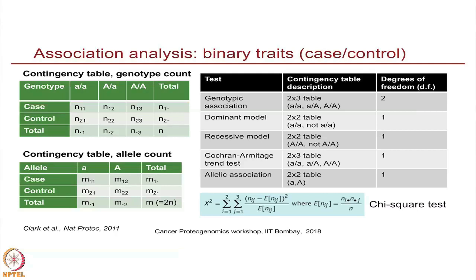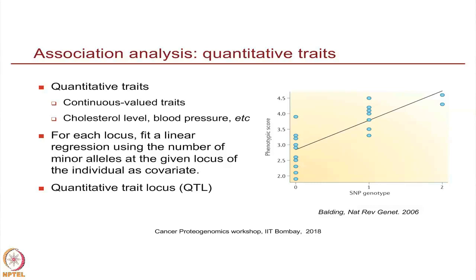For continuous or quantitative traits — for example, blood pressure or cholesterol levels — we can fit a linear regression model against the data. The covariates will be the number of minor alleles per individual, correlated against the continuous measurement of the phenotype such as blood pressure, and then you test the goodness of fit of that linear regression. If you find a locus is actually associated with a quantitative trait, we call that locus a quantitative trait locus or QTL.